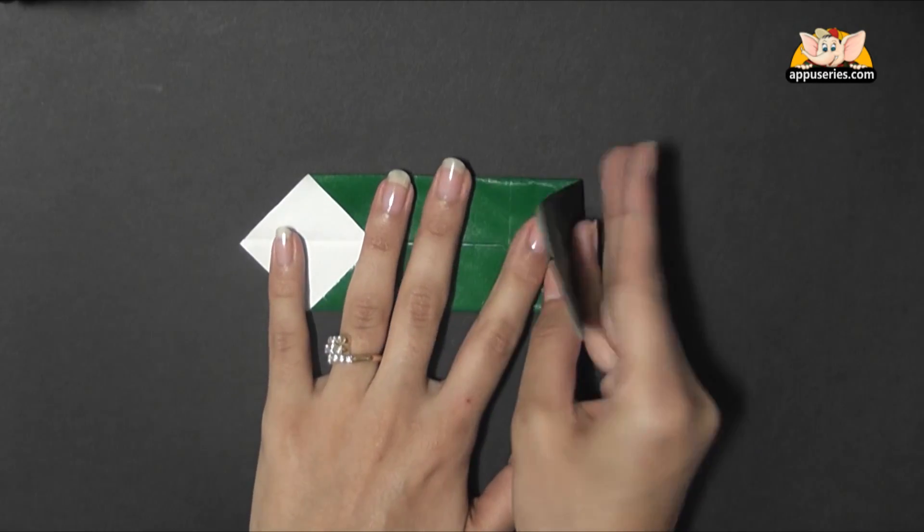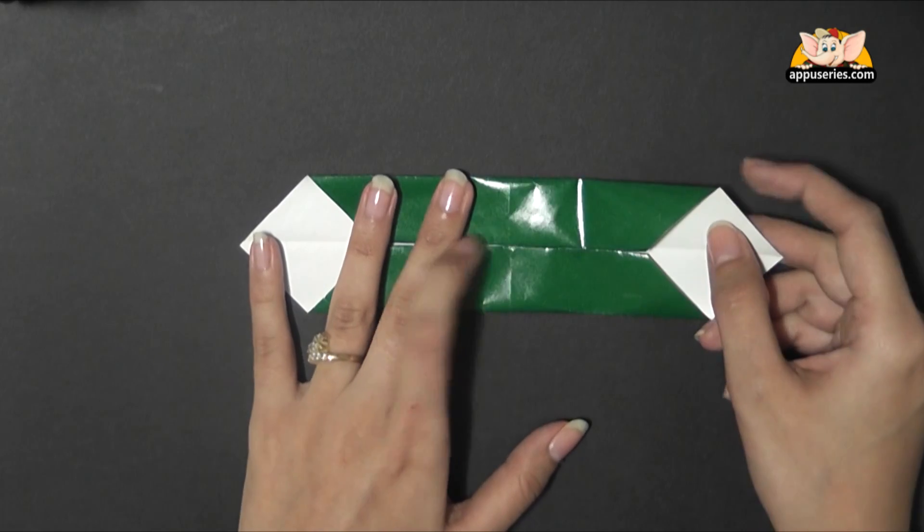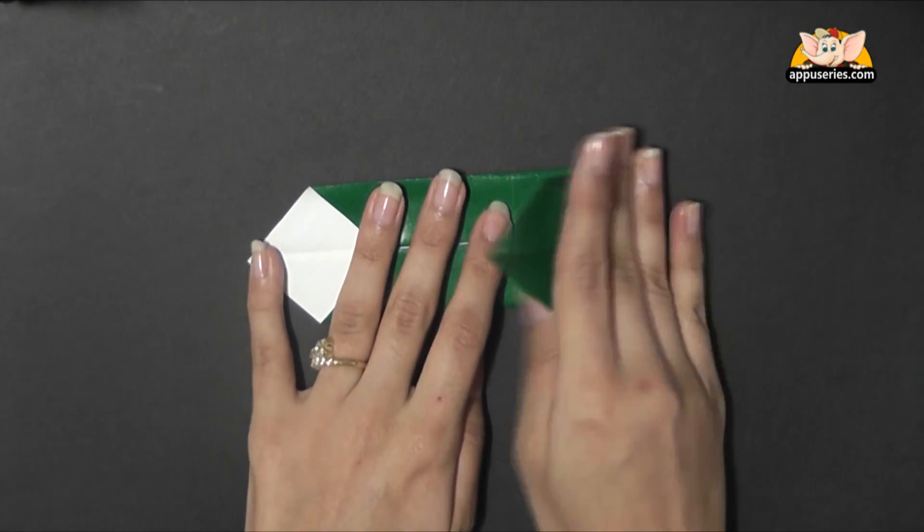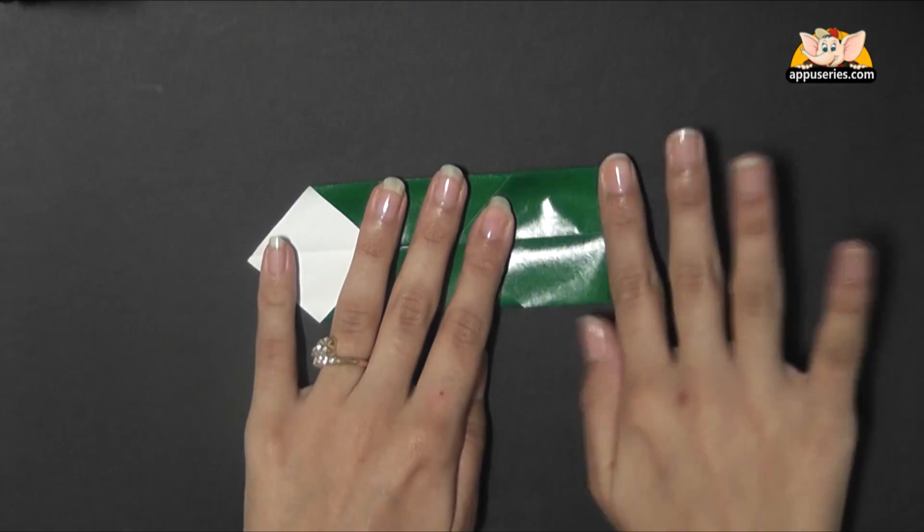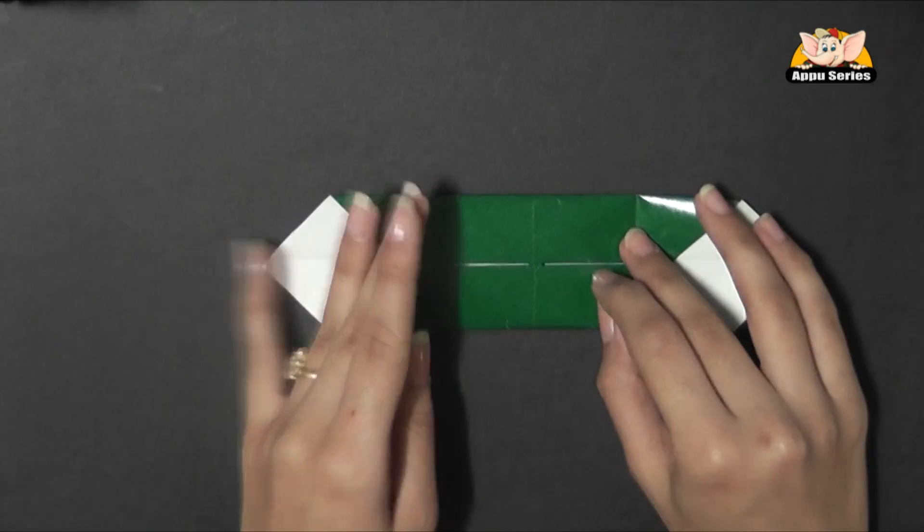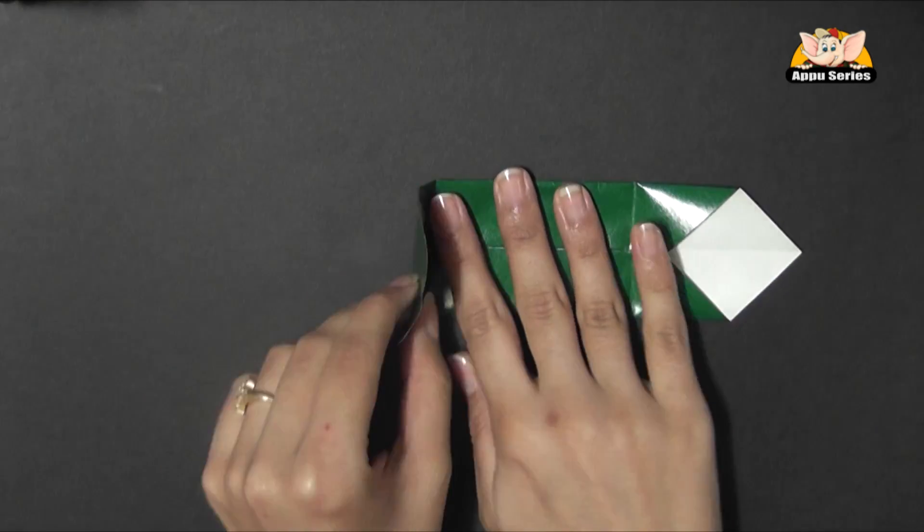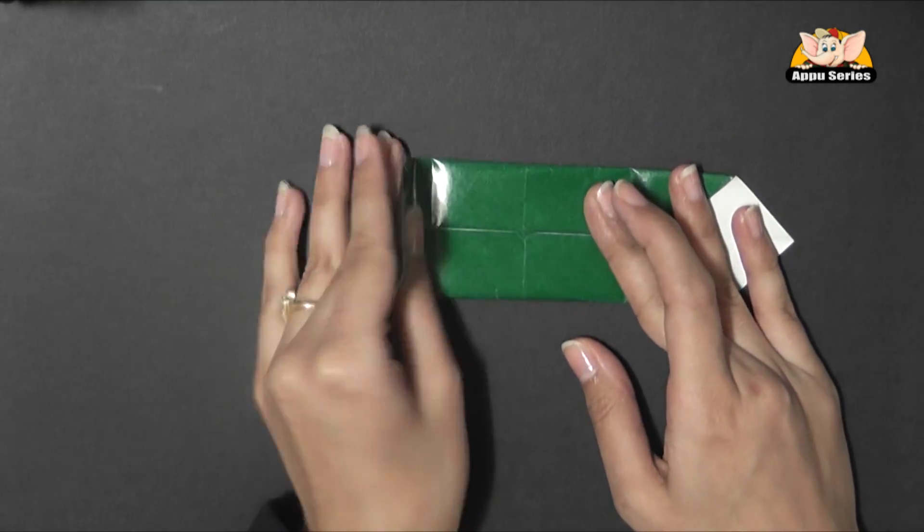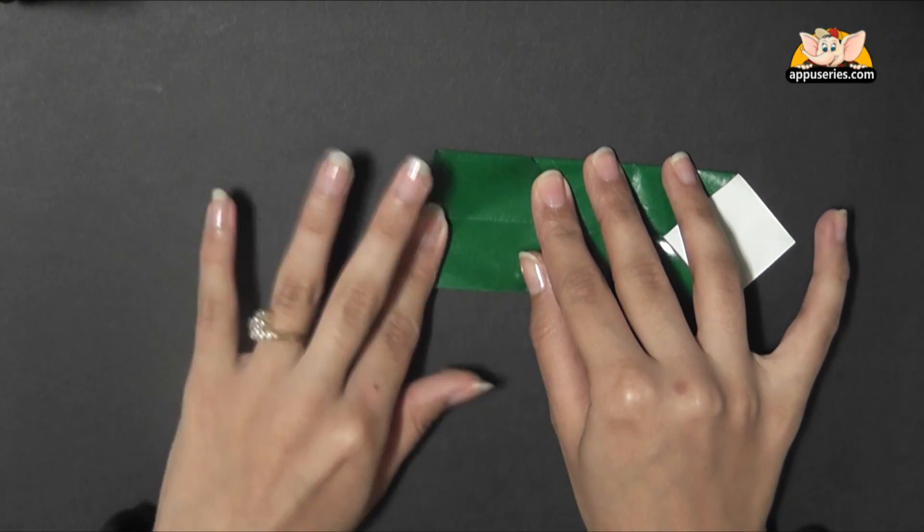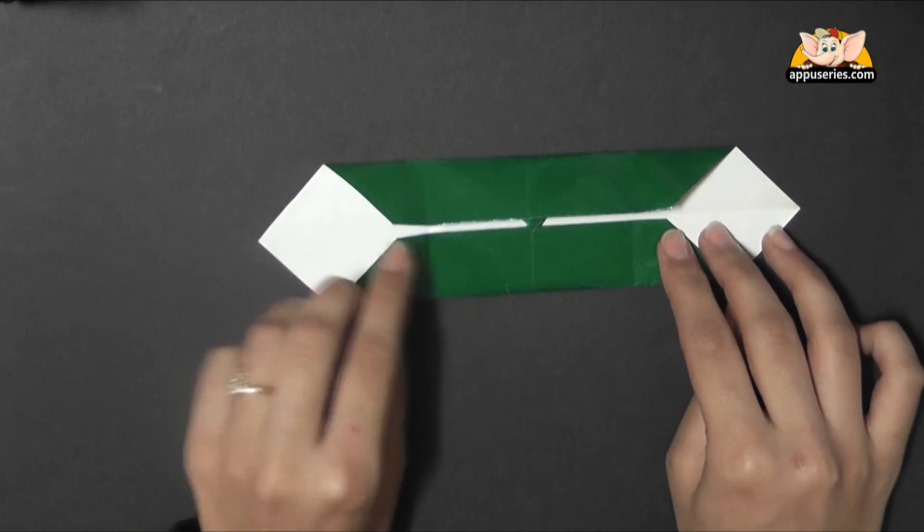Now we are going to bring this right side over to the left so that this point meets this center line. Just make a light crease so that you just get a very light line here. I will tell you later why we need to do that.